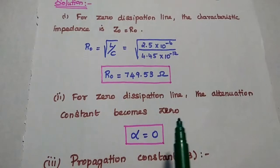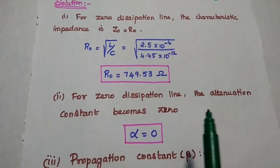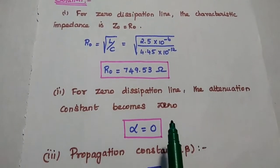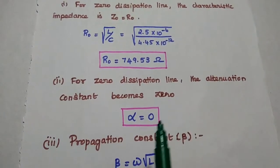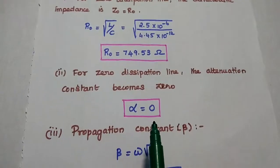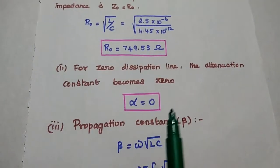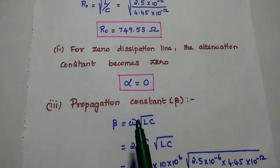Next, for the zero dissipation line, the attenuation constant becomes zero. Here alpha is equal to zero.